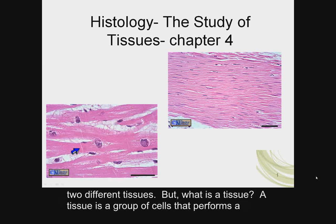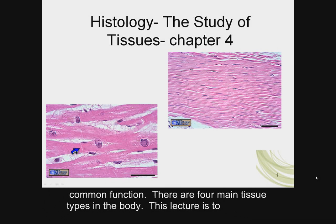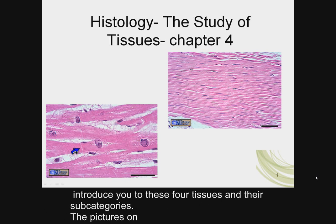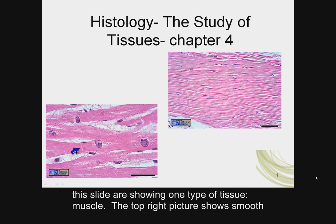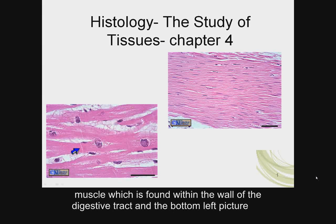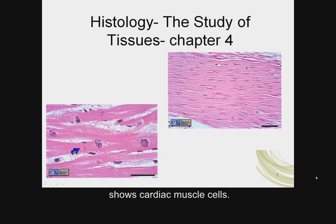Organs are made up of at least two different tissues. But what is a tissue? A tissue is a group of cells that performs a common function. There are four main tissue types in the body. This lecture introduces you to these four tissues and their subcategories. The pictures on this slide show one type of tissue — muscle. The top right picture shows smooth muscle, found within the wall of the digestive tract, and the bottom left picture shows cardiac muscle cells.